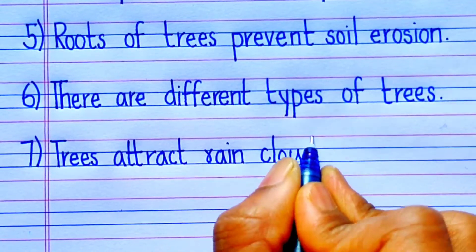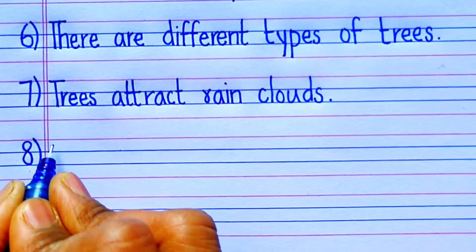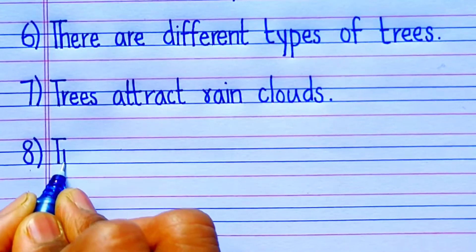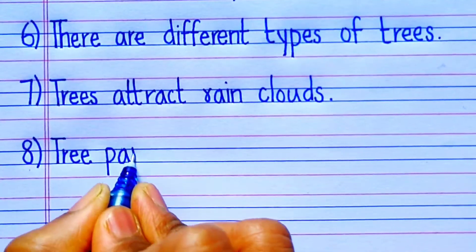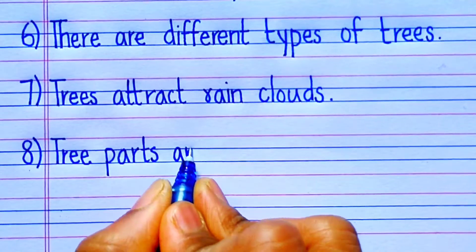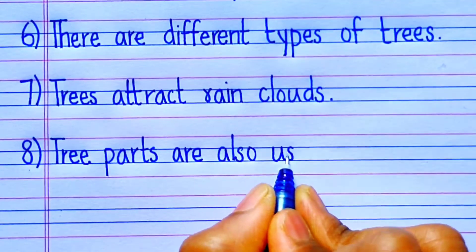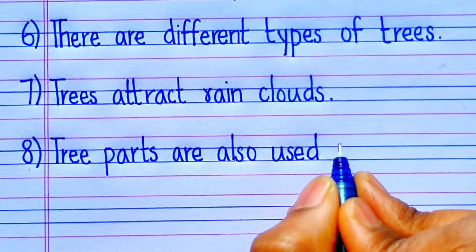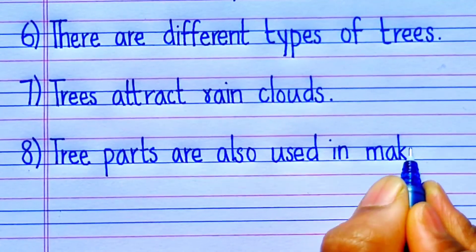The seventh point is: Trees attract rain clouds. The eighth point is: Tree parts are also used in making medicines.